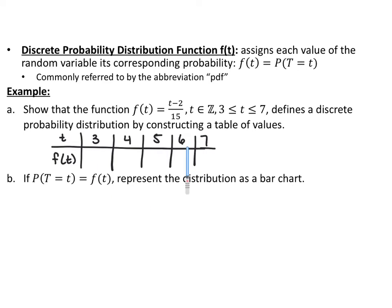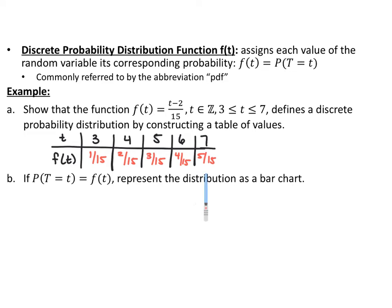Given our function and these t values, find f(t) and leave your answer as an unsimplified fraction. If you plug them in, you should end up with 1/15, 2/15, 3/15, 4/15, and 5/15.